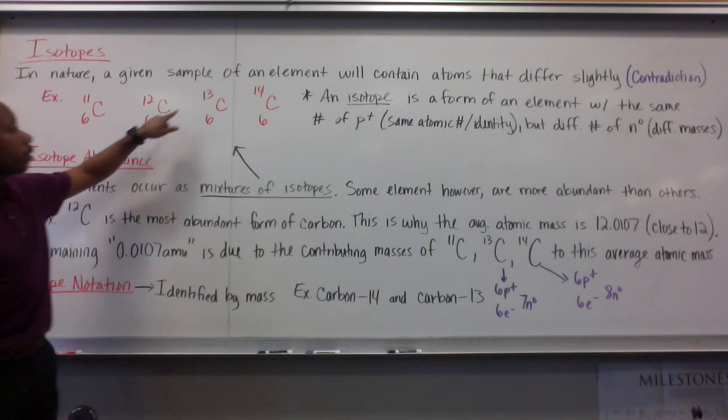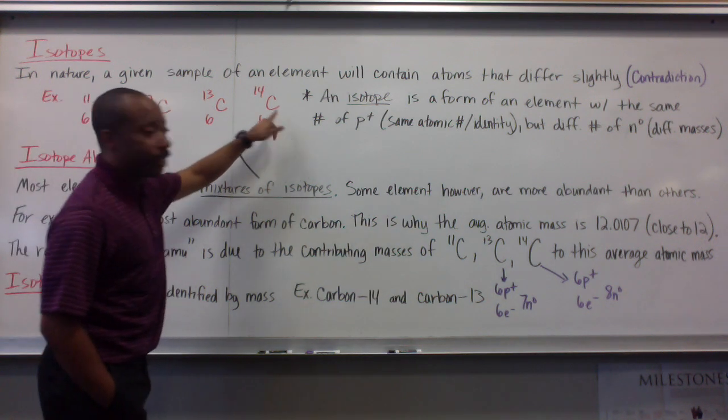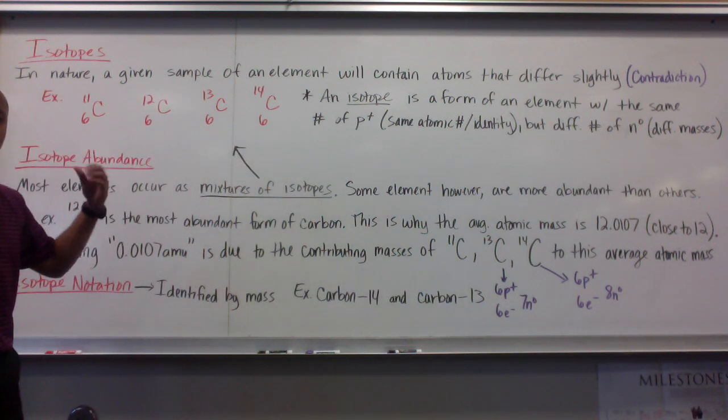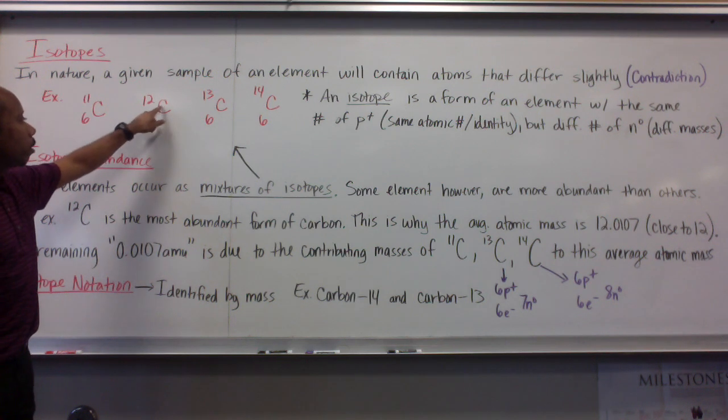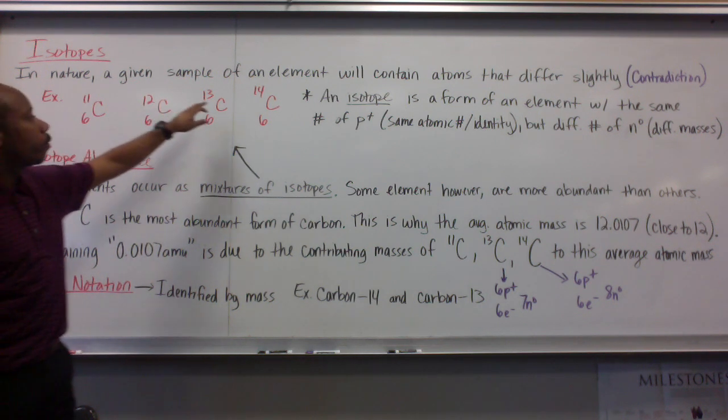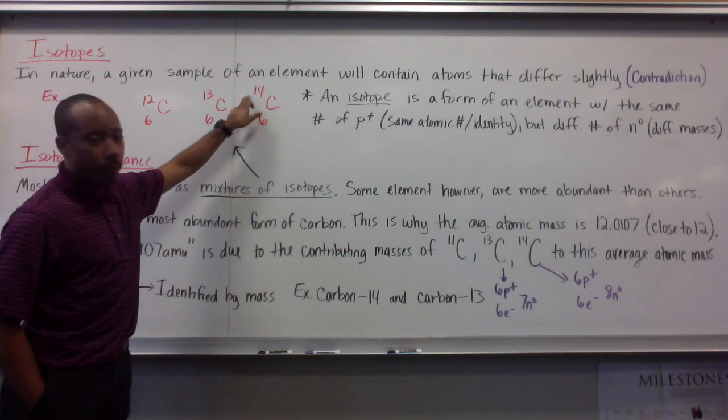Now, an example of what this first line means. I have carbon atoms. They differ slightly. How do they differ slightly? In their notation. I have carbon with the mass number of 11, carbon with the mass number of 12, mass number 13, mass number 14.